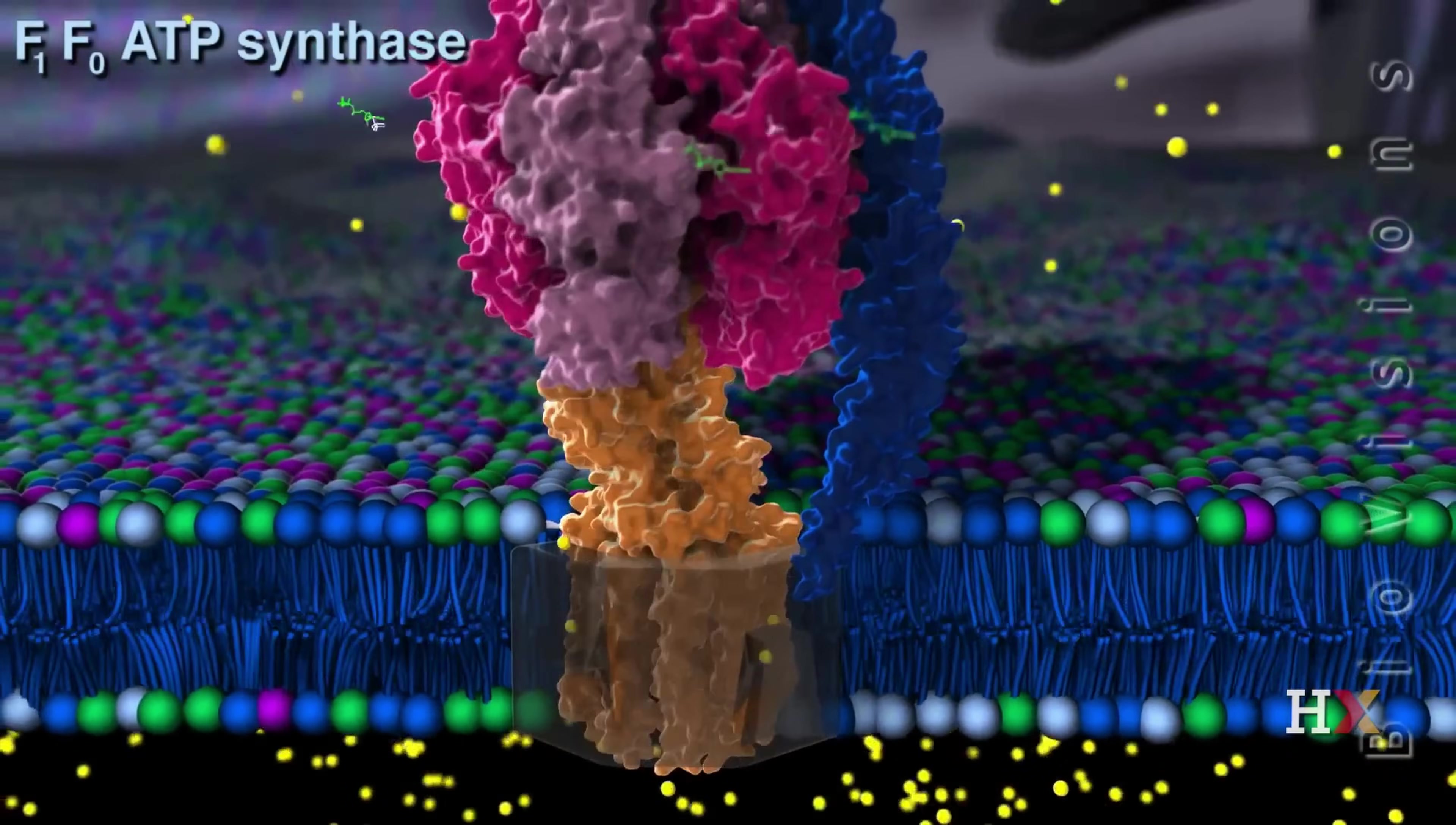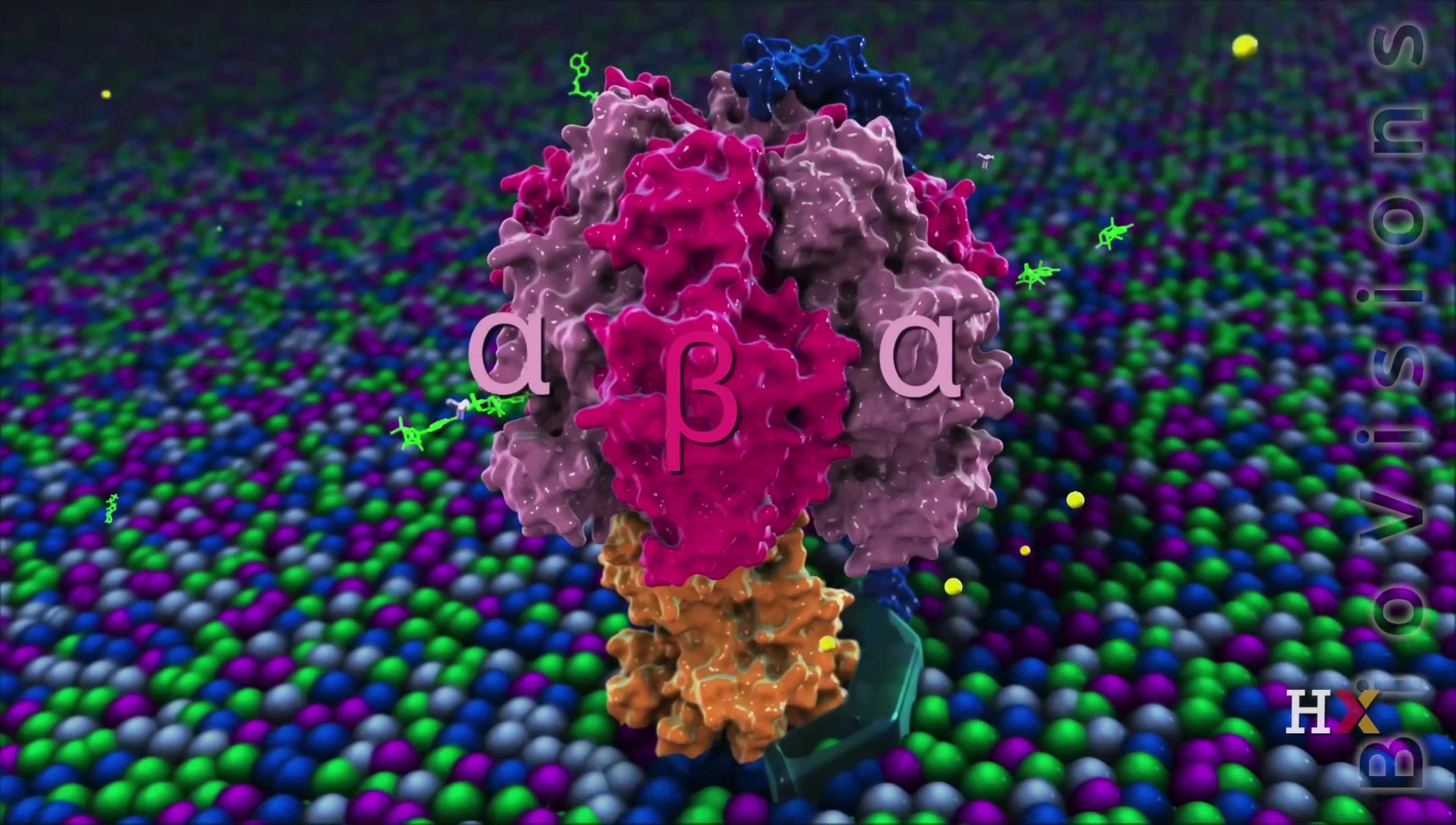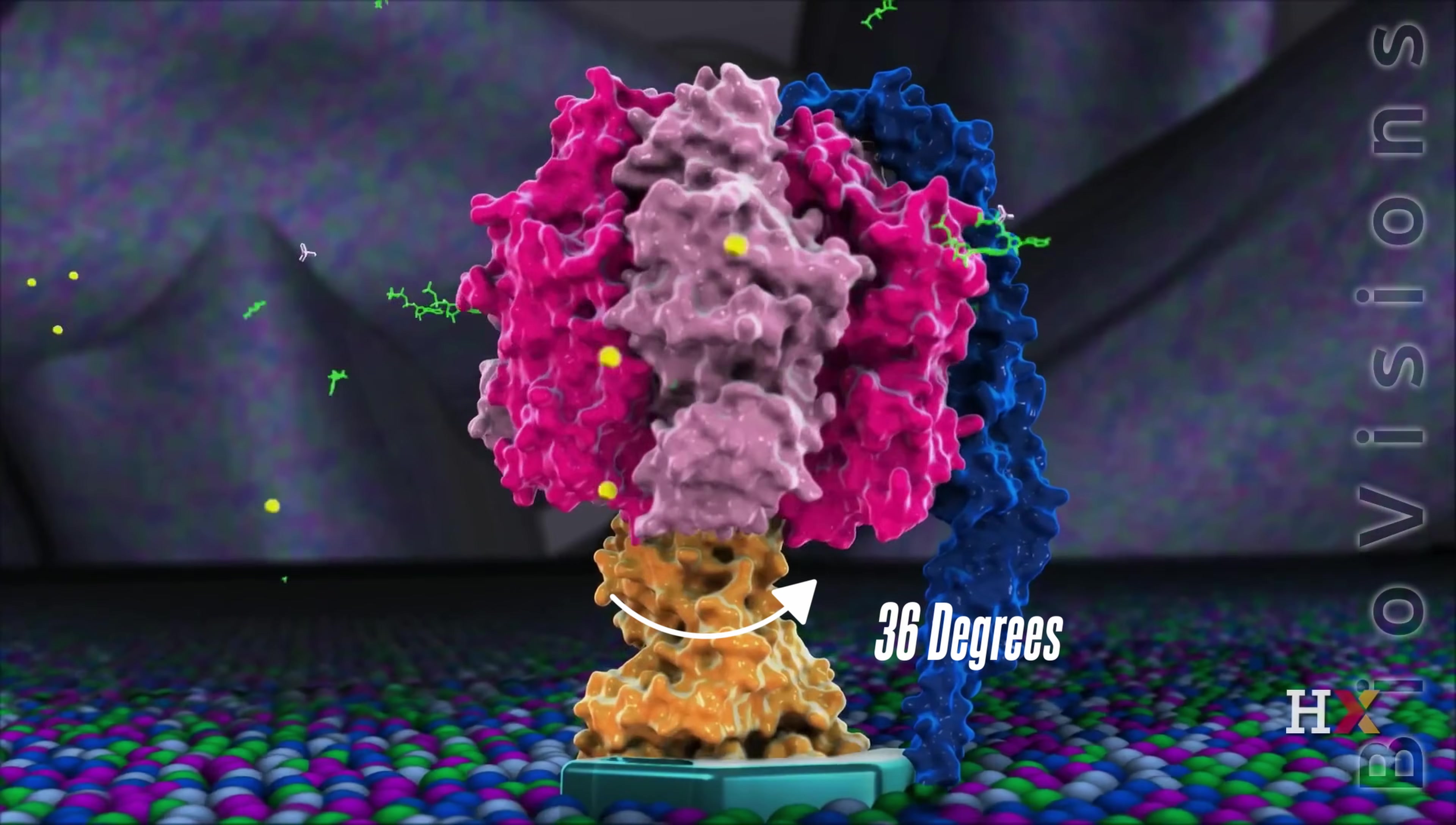Like water in a dam turning turbines, its rotation provides the flow of protons. ATP is produced by the protons spinning the generator. Each proton transfer results in a 36-degree rotation. This is how the return happens.